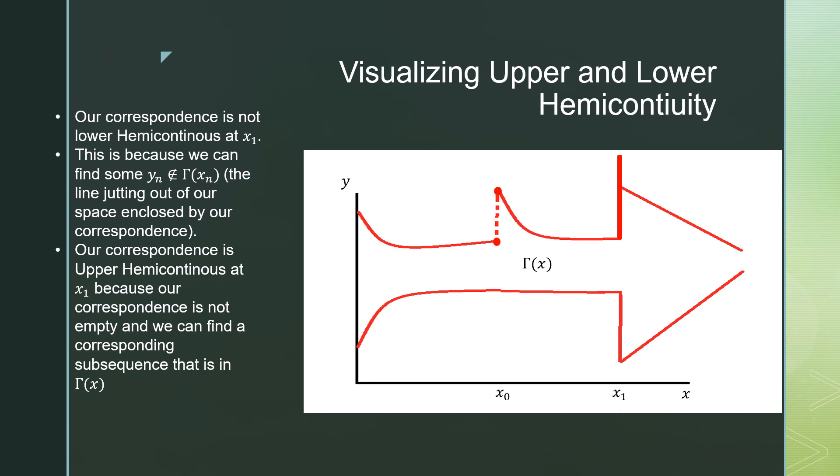Let's talk about point x_1. Our correspondence is not lower hemicontinuous at point x_1. This is because we can find some y_n that is not contained in our constraint set. So let's say we're considering in the area over here, just drawing a little circle.